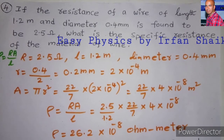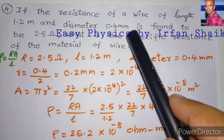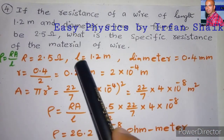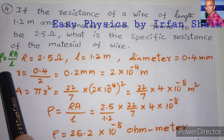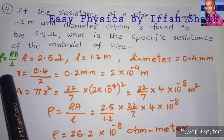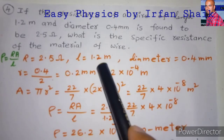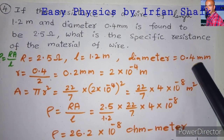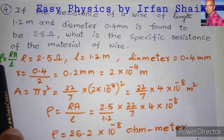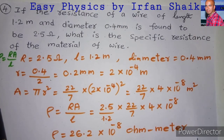Next, fourth problem. If the resistance of a wire of length 1.2 meters and diameter of 0.4 millimeters is found to be 2.5 ohms, what is the specific resistance of the material of wire? The formula we need to apply here is Rho equals R times A divided by L. Resistance is given as 2.5 ohms, length is 1.2 meters, and diameter is 0.4 millimeters. We need to find specific resistance Rho. R and L are given, but cross-sectional area A is not given.